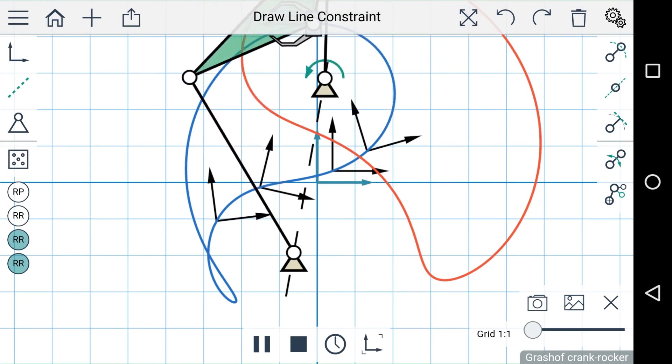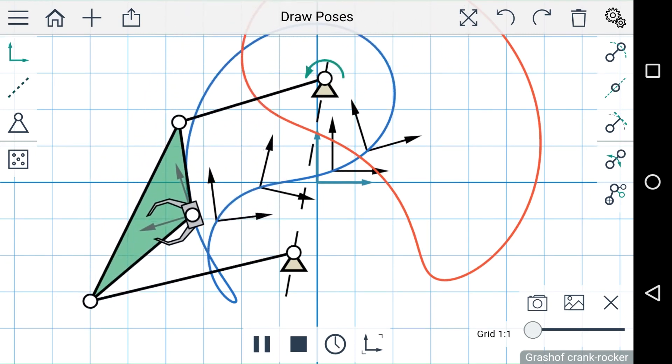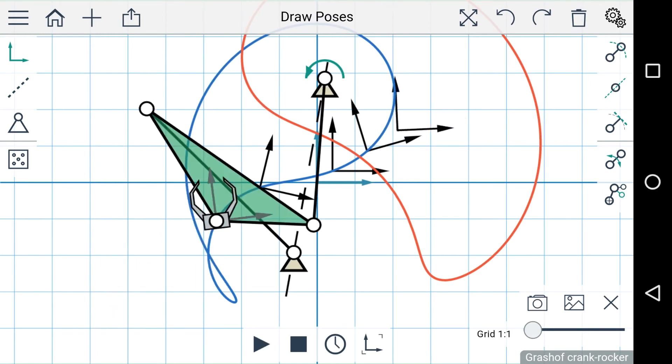And now that we have that line constraint we can add more poses and once again MotionGen will give us an approximate solution.